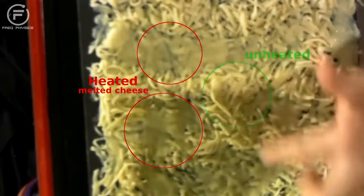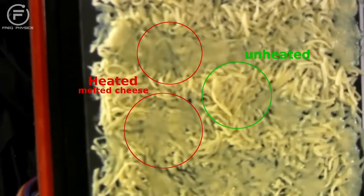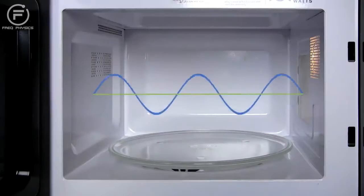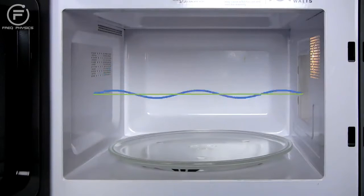You can see sections where the cheese is completely melted and other sections where it's completely unheated. The oven's metal walls only reflect waves of a length that fits inside the oven. This standing wave causes hot and cold spots inside the oven.